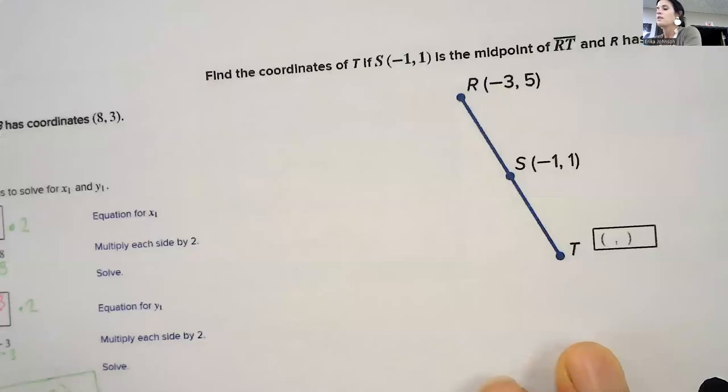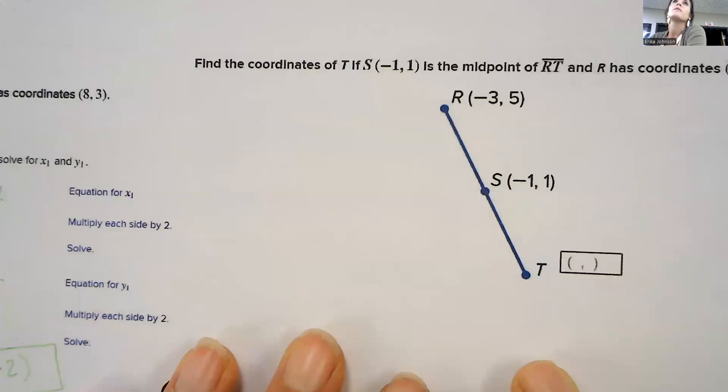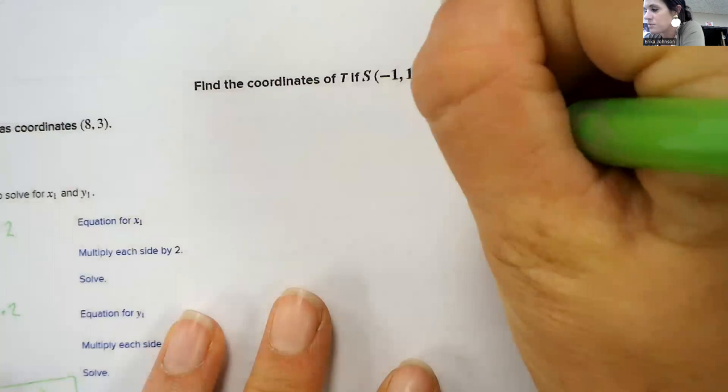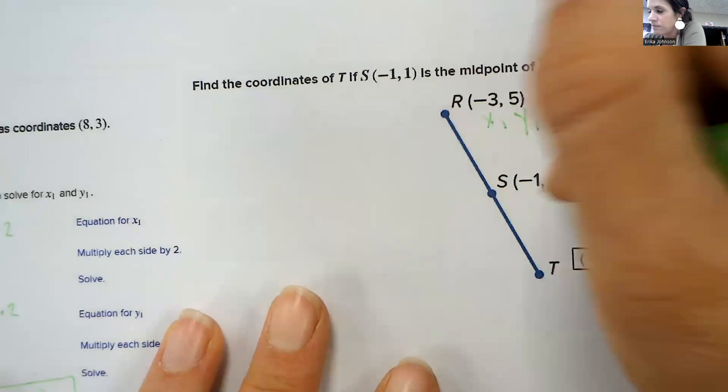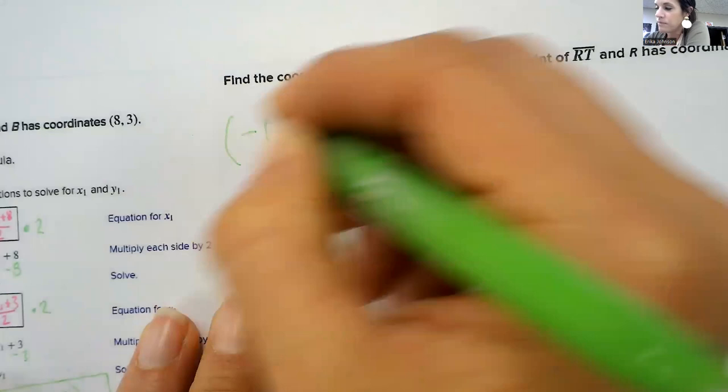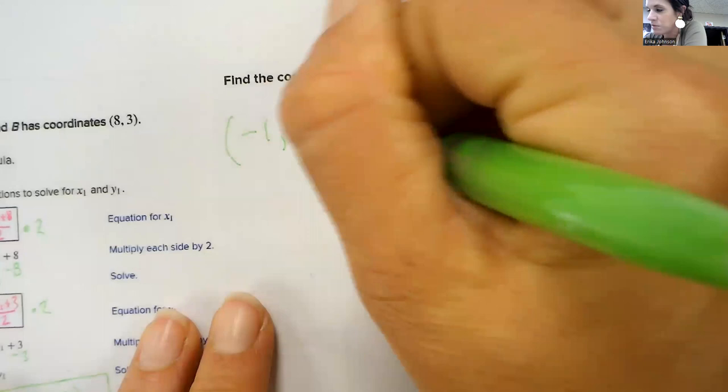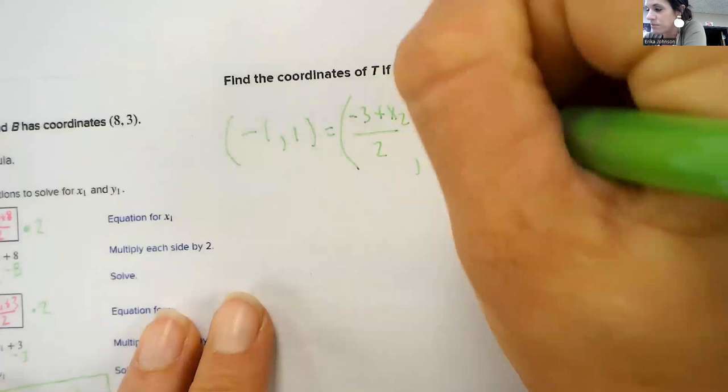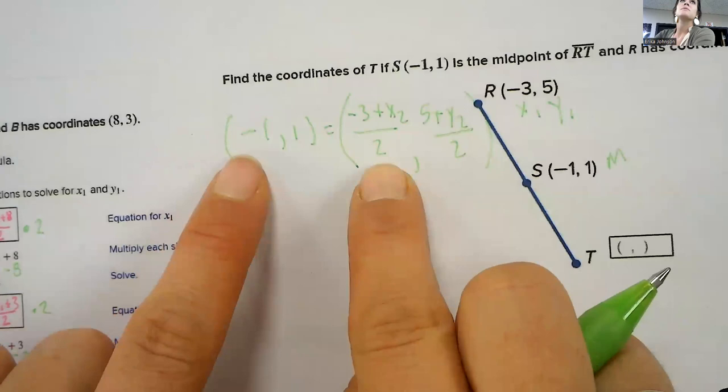All right. So this is hard. So let's practice another one of those. We have, let's call this, this time, let's call this x1 and y1. And we have our midpoint. That's our midpoint. So I have negative 1, 1 is equal to, and you would do x1 plus x2 over 2, and y1 plus y2 over 2.